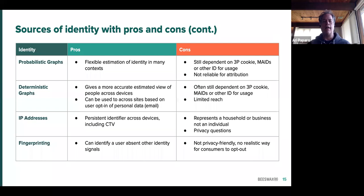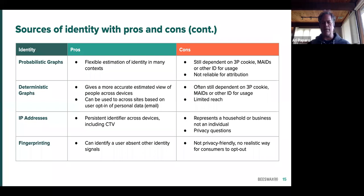Deterministic graphs, however, are being built on top of first-party cookies — the idea being that we have someone's real email, real phone number, etc. This is where a lot of investment is taking place. But they sometimes have the same problem: they have to be linked to other identities, so they're not a standalone solution in some cases. IP addresses are persistent across devices in a household, but it's not a user — it's a household or a business. There are privacy questions, and it's difficult for an end user to opt out of an IP address. IP addresses tend to be used as an ingredient to other identity processes rather than a standalone, and they're used for advertising intended to be at the household or business level.